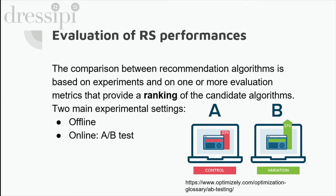We distinguish between two experimental settings. Offline experiments are the easiest to conduct as they do not require actual users but are based on historical data. Online experiments involve the system being used by a pool of real users, typically unaware of the experiment itself. At Recipe, for example, we always conduct A/B tests — a controlled experiment where two versions of the same recommender variable are compared: a control version and a variation version — to figure out which performs better according to conversion rate.